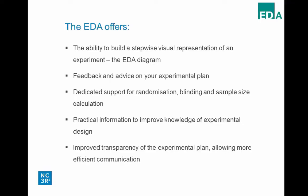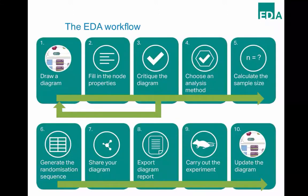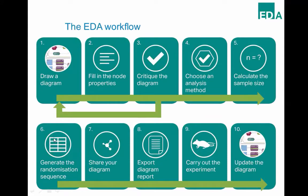The diagrams really improve communication around experimental design — they are explicit descriptions of your experimental plan. You can keep them for your own records, which is handy when you come to publish three years down the line, or use them to get feedback from colleagues. A PhD student could use this to get feedback from their supervisors. The workflow is: draw a diagram, add details into node properties, critique and get feedback, iterate until happy with the design, then choose a method of analysis, calculate sample size, generate a randomisation sequence, and share your diagram with another EDA user.